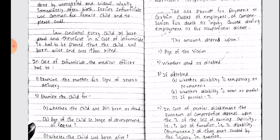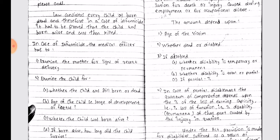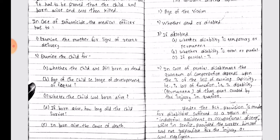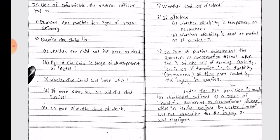The amount depends upon the age of the victim, whether dead or disabled; if disabled, whether the disability is temporary or permanent, whether disability is total or partial; and if partial, the percentage.